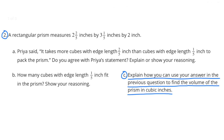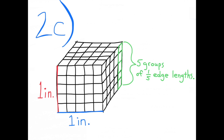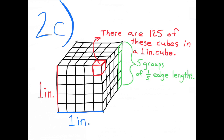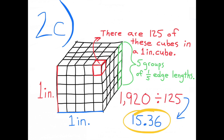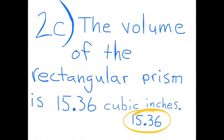Part c: To find the volume using the previous answer, here is an example of a one-inch cube. As you can see in green, there are five groups of one-fifth edge lengths stacked across one edge, meaning 125 of these one-fifth edge length cubes fit in a one-inch cube. So 1,920 divided by 125 equals 15.36 — the volume of the rectangular prism is 15 and 36 hundredths cubic inches.